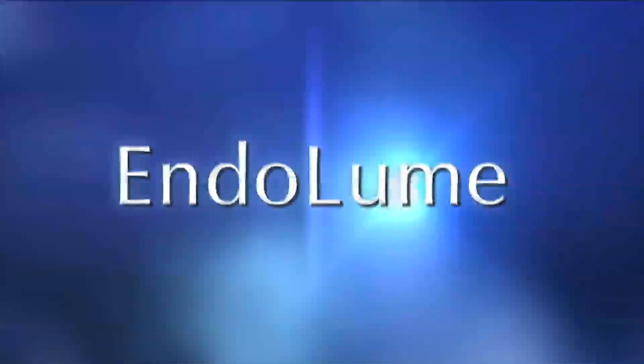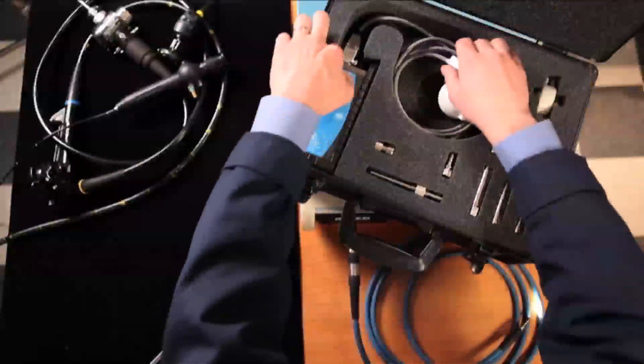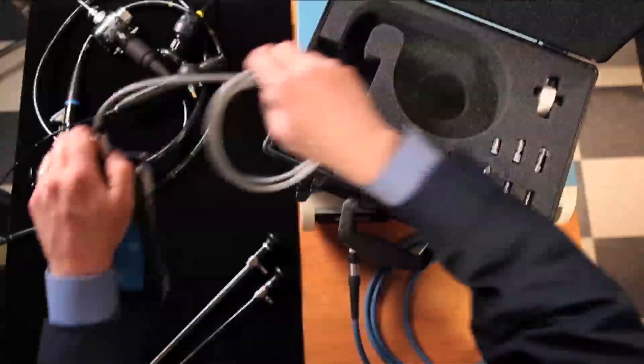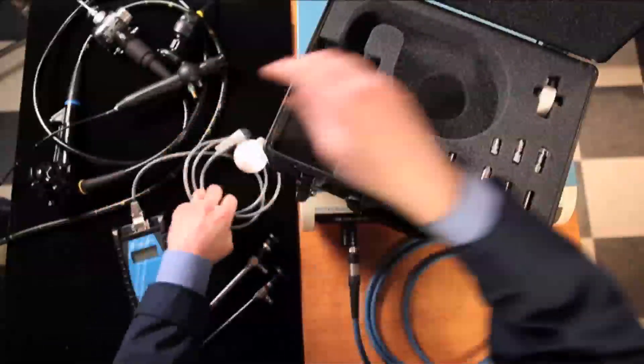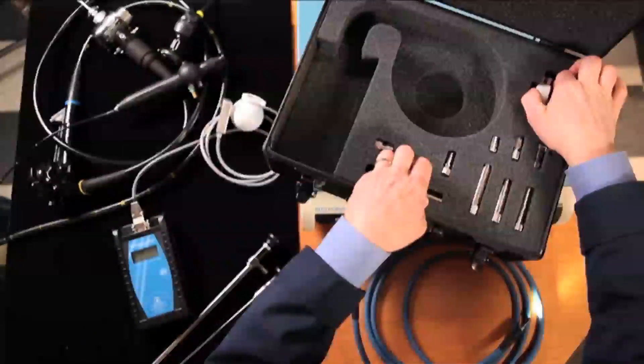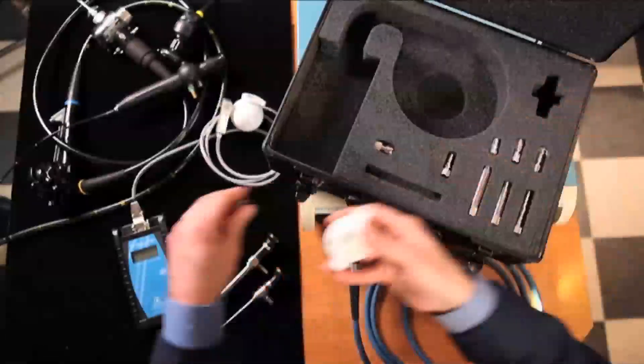The Endolume Endoscope System Photometer isolates endoscopic illumination failure points and quickly assists in a cost-effective approach to repair, all in a simple-to-operate portable kit.